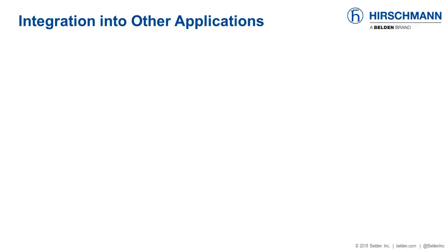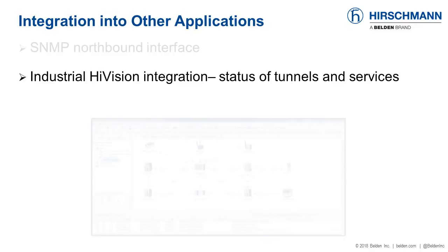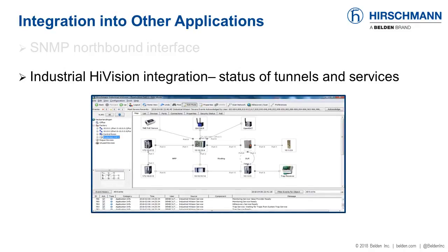What are the options? HyperVision offers a Simple Network Management Protocol northbound interface — in plain English, this means that HyperVision can provide information about the MPLS-TP network to any other network management application which supports SNMP. HyperVision is a network management platform designed in-house and programmed by our own developers. Industrial HiVision is typically used to configure and supervise switches, firewalls, wireless access points, and any third-party devices. We've ensured a tight integration with HyperVision, so information about the MPLS-TP network — such as the status of tunnels and services — is available directly within Industrial HiVision. A single application allows you to supervise both your MPLS-TP network and your standard Ethernet networks simultaneously.